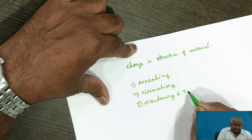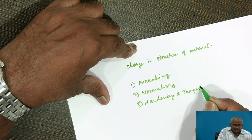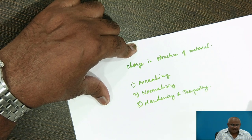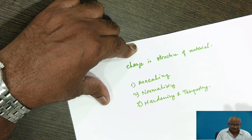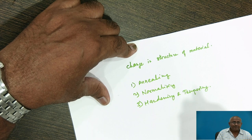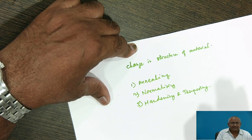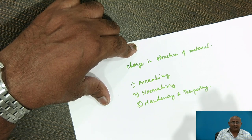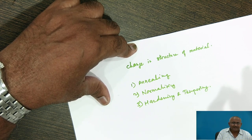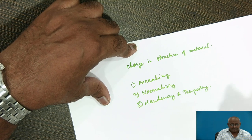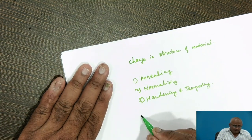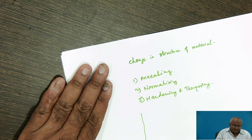Today we are going to focus on the purposes of annealing heat treatment. In annealing heat treatment, we have to heat the steel either above the A3 temperature, or in between the A1 and A3 temperature, or below the A1 temperature.